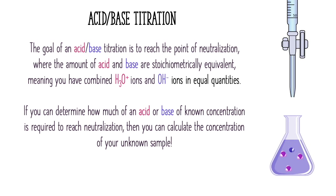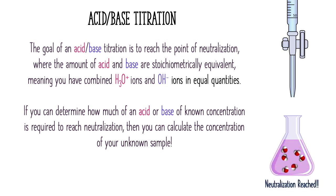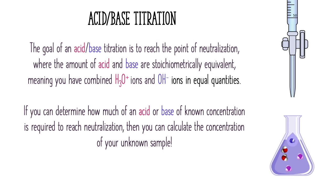The goal of an acid-base titration is to reach the point of neutralization, where the amount of acid and base are stoichiometrically equivalent — meaning you have combined hydronium ions and hydroxide ions in equal quantities. If you can determine how much of an acid or base of known concentration is required to reach neutralization, you can use that information to calculate the concentration of the solution you don't know.